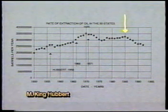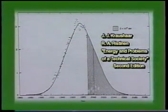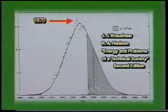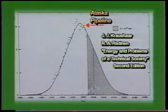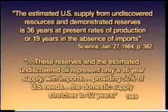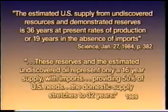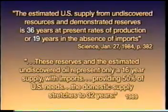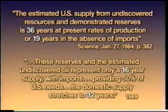Standing back to look at the whole Hubbert curve, you see the peak in 1970, the bump from the Alaska pipeline, and now we're falling rapidly down the right-hand side, just as Dr. Hubbert projected. The Geological Survey in 1984 estimated U.S. supply from undiscovered resources plus demonstrated reserves at 36 years of present production rates, or 19 years in the absence of imports. By 1989, those numbers had decreased to 32 years and 16 years respectively. The numbers are holding together as we march down the right-hand side of the Hubbert curve.